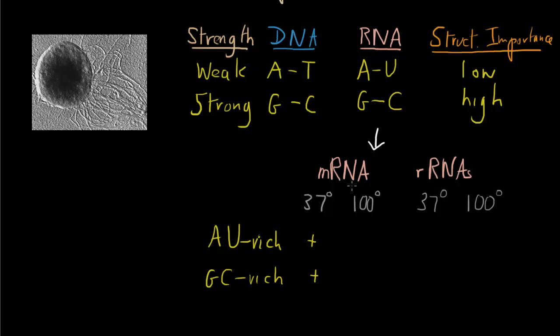For messenger RNAs of organisms operating at much higher temperatures, again we find some messenger RNAs are A-U rich and some are G-C rich. Since A-U rich messenger RNAs can function perfectly well at high temperatures, we can therefore assume that their structure is not critically important for that function.